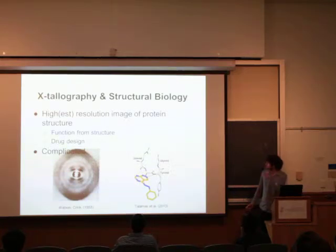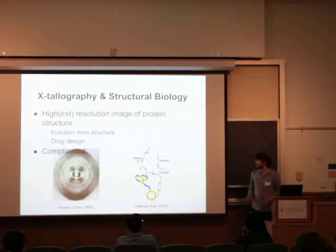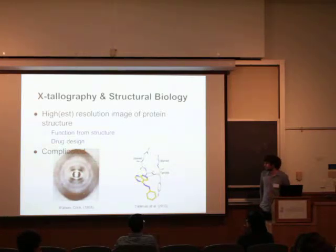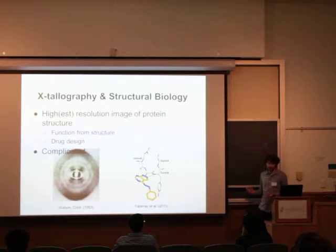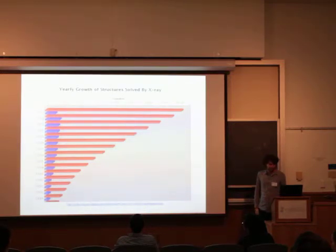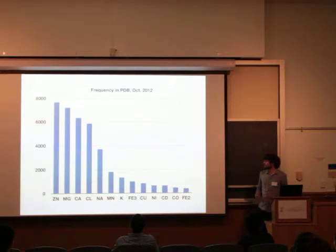A little bit of background on crystallography: it gives you a really high-resolution structure of proteins, which is really useful. You can use that to find out the function of a protein, or figure out which parts of the protein are being targeted. Crystallography is a really big deal — there are currently around 80,000 structures in the protein data bank, and it grows every single year. Among these, there are lots of ions, which are tiny little metals that will co-crystallize with your protein and bind to some site on the protein.